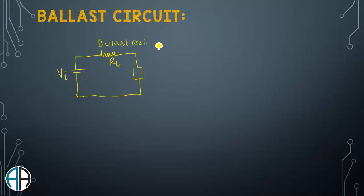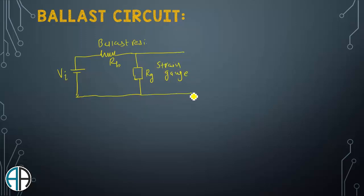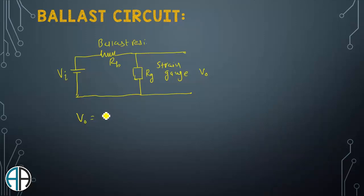The strain gauge is basically a resistive element, so its resistance is indicated as gauge resistance Rg. This resistance represents the strain gauge. We measure the output voltage Vo across the terminals of the strain gauge. Using the simple voltage division rule, the equation for Vo is: Vo equals Rg divided by the total series resistance (Rb plus Rg), multiplied by the input voltage Vi.